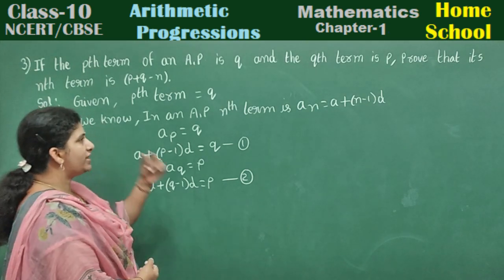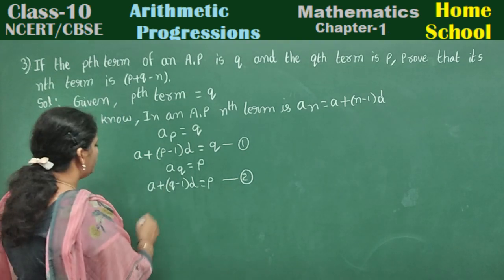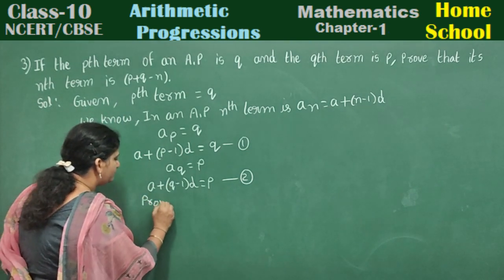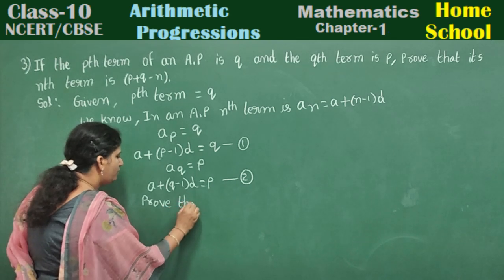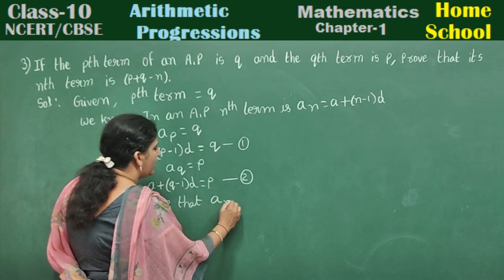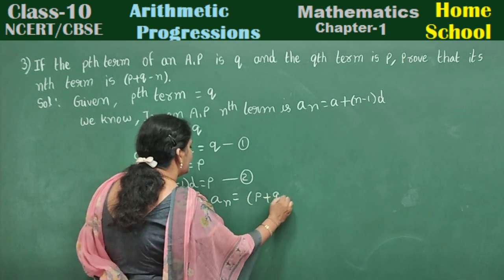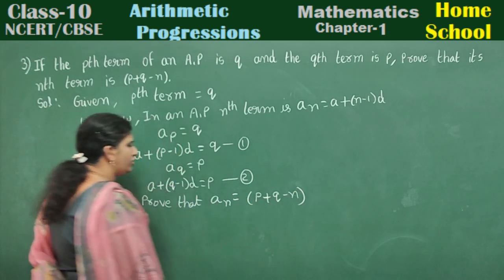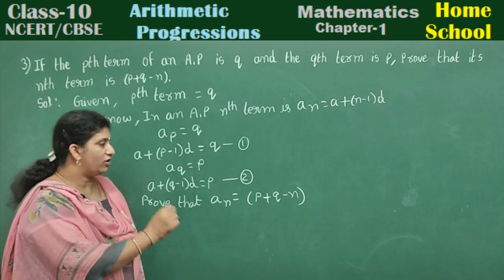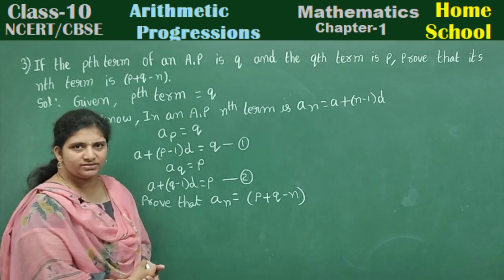Now show that its nth term is — what we need to prove here? Prove that the nth term, an, is equal to p plus q minus n. You need to prove an is equal to p plus q minus n. How can we prove this?